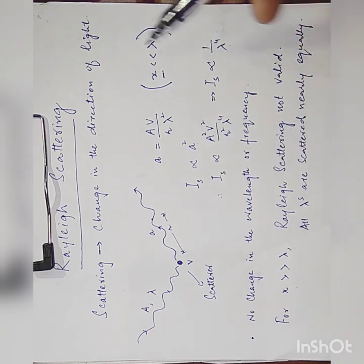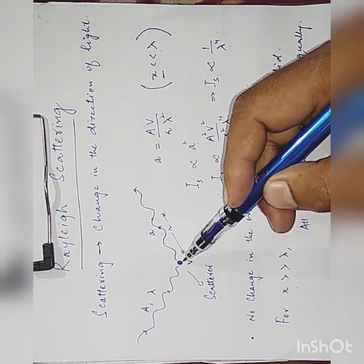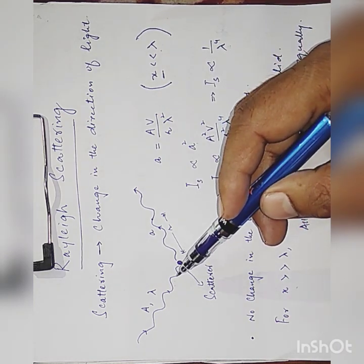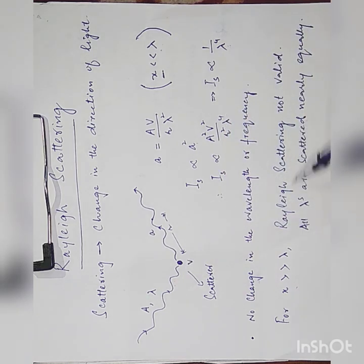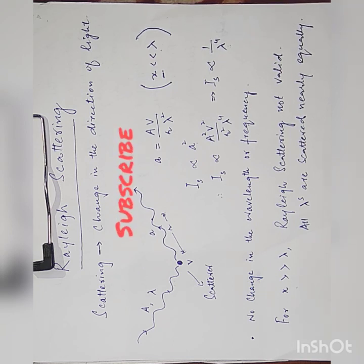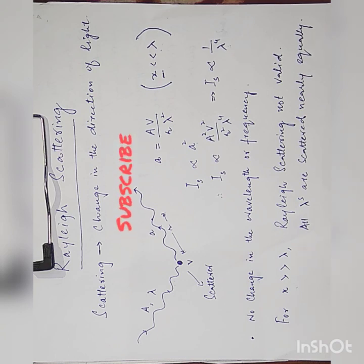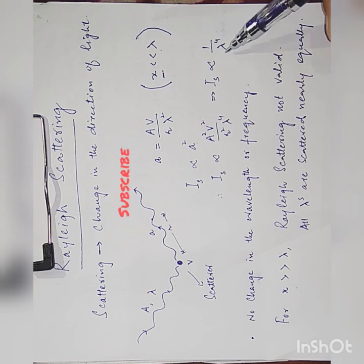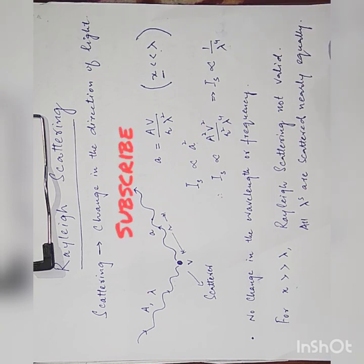Now if this condition is not satisfied — if the particle size is very large as compared to the wavelength of incident radiation — then in that case Rayleigh scattering is not valid. For example, if the particle size is much larger than the wavelength of incident radiation, then all the wavelengths — for example in visible light we have seven colors — all seven colors will be scattered equally. In this case the Rayleigh formula does not apply, because the particle size is very large compared to the wavelength.